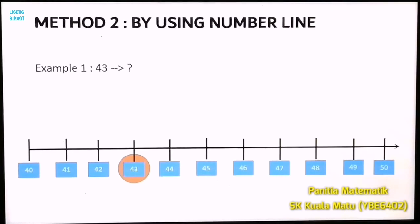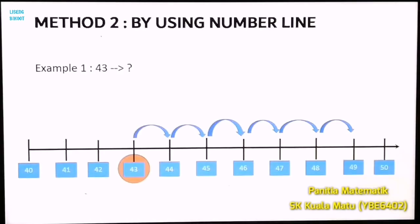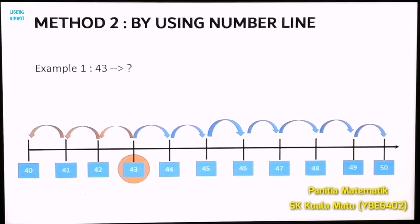From number 43, count how many steps are needed to reach number 50 — it's seven steps. Now from number 43, count how many steps are needed to reach number 40 — it's three steps. Compare which is nearest. In this case, number 40 is nearest — we only take three steps to reach it. Therefore, the answer is 40.